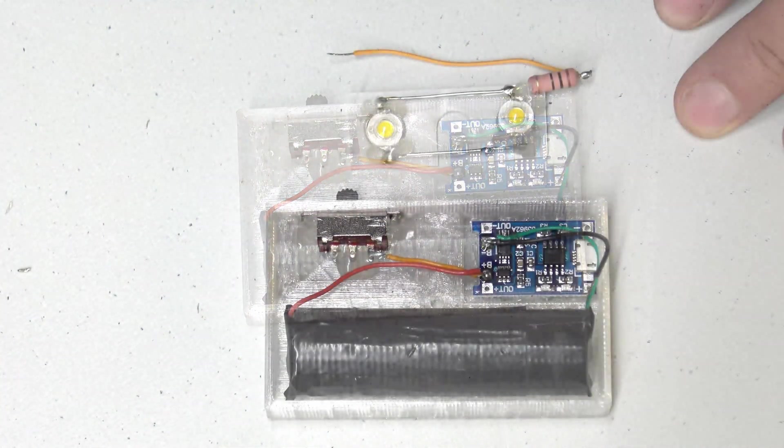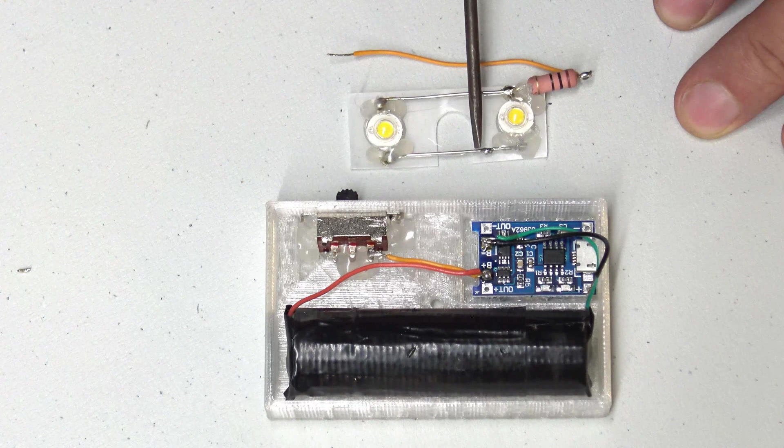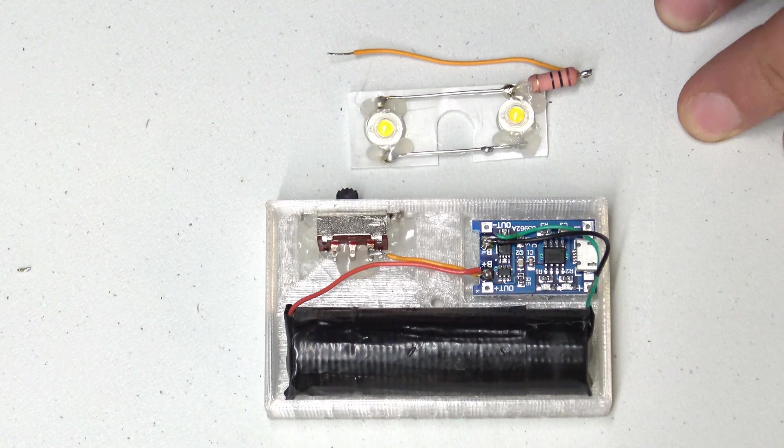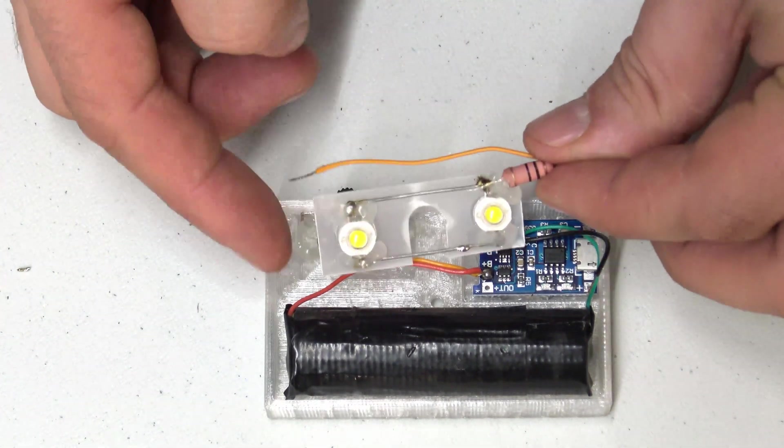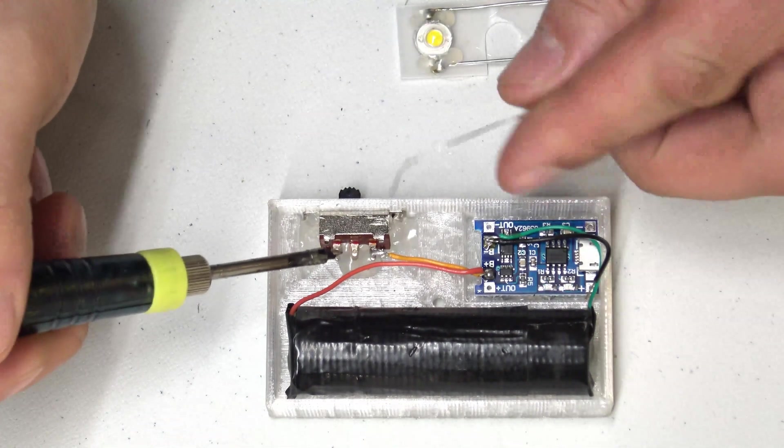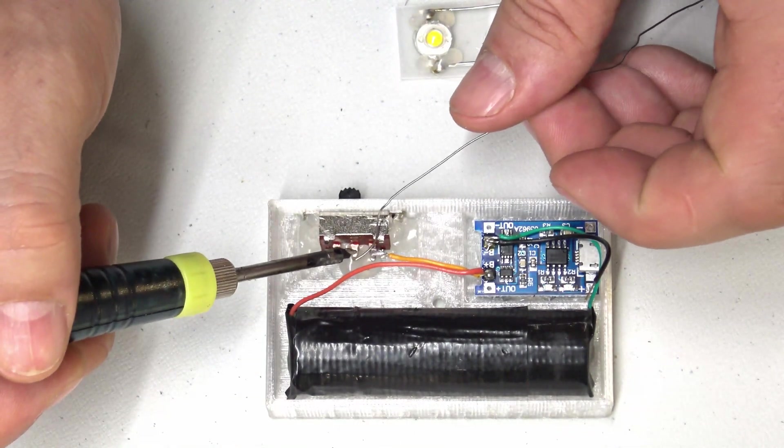And eventually what we're going to do is we're going to connect the PCB that we've assembled here to the positive center, the center pin of that switch, which is the one that's connected to the resistor there. So we're just going to go ahead and solder that up right now.